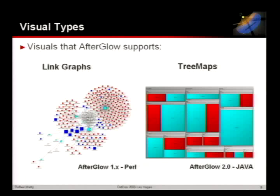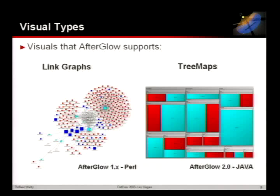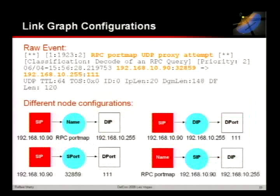What I want to cover today is just two types of graphs: link graphs and tree maps. Link graphs have a couple of nodes connected to each other, showing certain relationships. Tree maps look a little complicated at first, but I'll introduce them and show exactly what they are in a second.